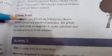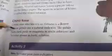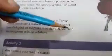China rose, also known as hibiscus, is a flower whose petals are natural indicator. The petals turn dark pink or magenta in acidic solution and become green in basic solution.